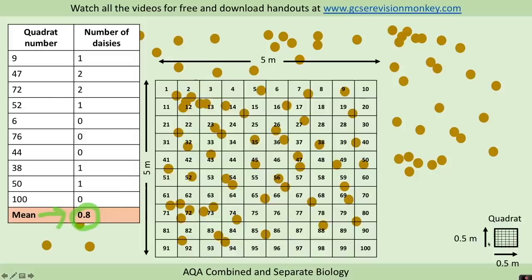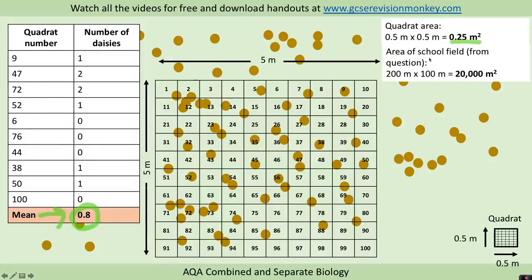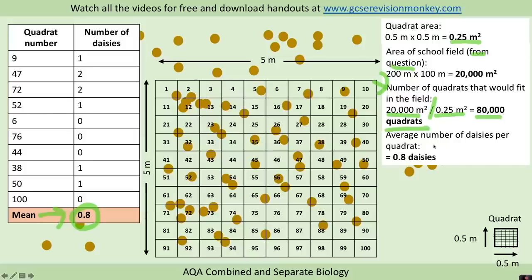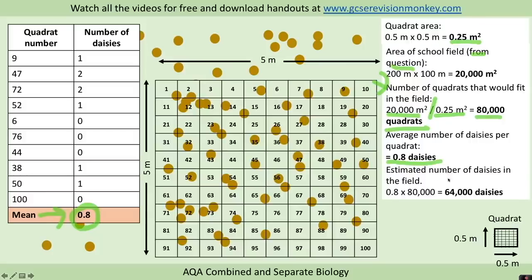To calculate the population estimate: the area of the quadrat is 0.5 × 0.5 = 0.25 meters squared. The area of the school field from the question is 200 × 100 = 20,000 meters squared. The number of quadrats that would fit in the field is the area of the field divided by the area of one quadrat, giving 80,000 quadrats. So if 80,000 quadrats fit in the field and the average number of daisies per quadrat is 0.8, then the estimated number of daisies in the whole field is 0.8 × 80,000 = 64,000 daisies.